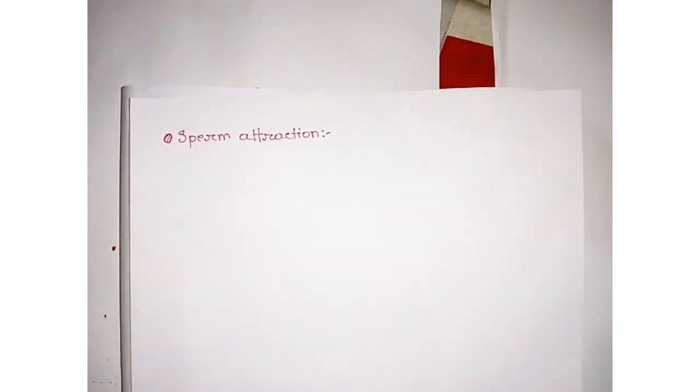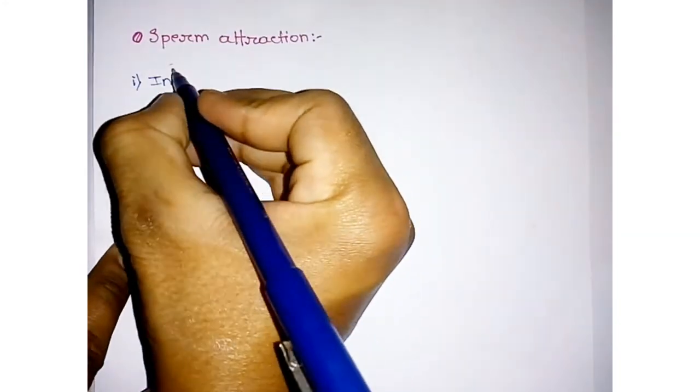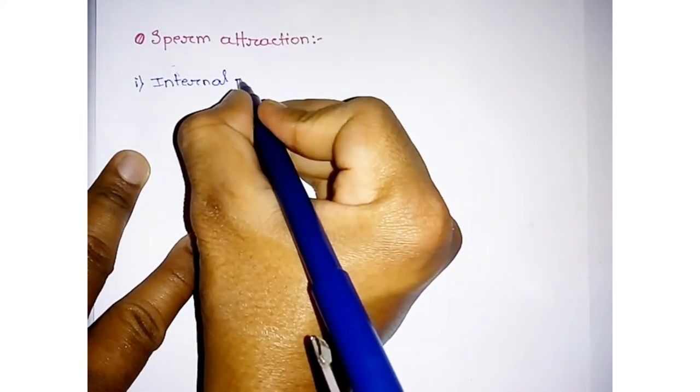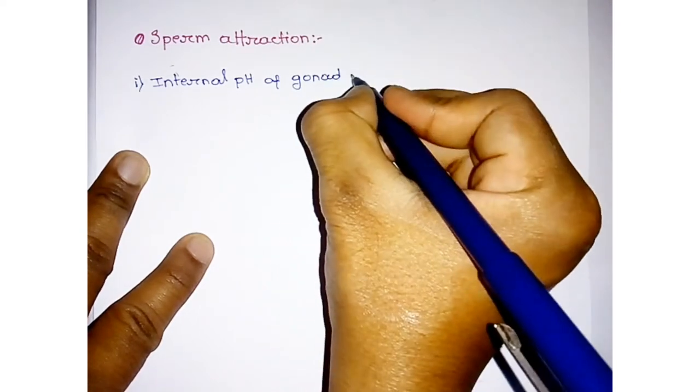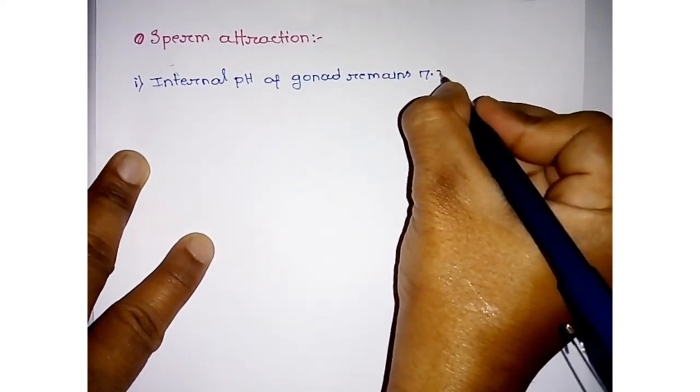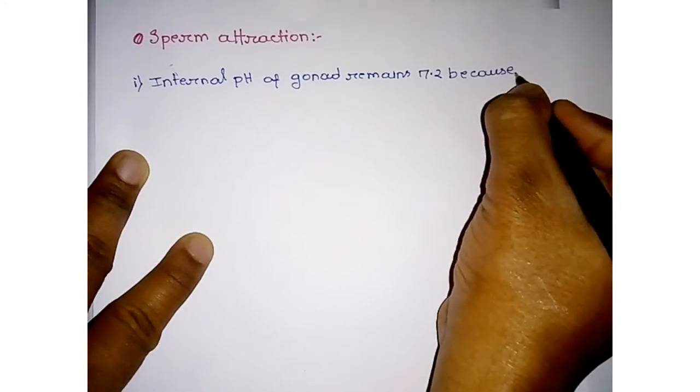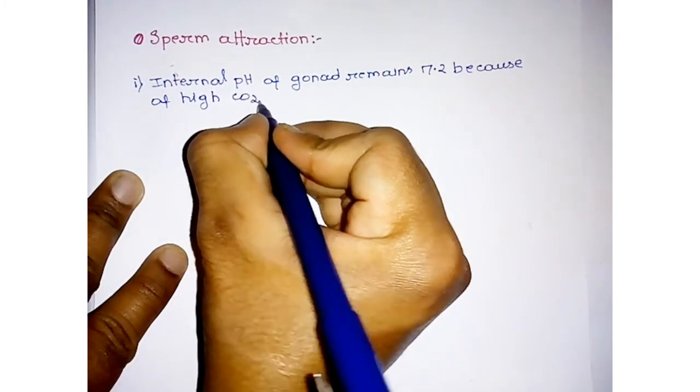What happens in this step? The internal pH of gonad of sea urchin remains 7.2 because of high CO2 concentration.